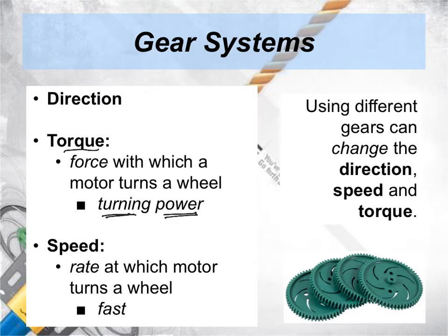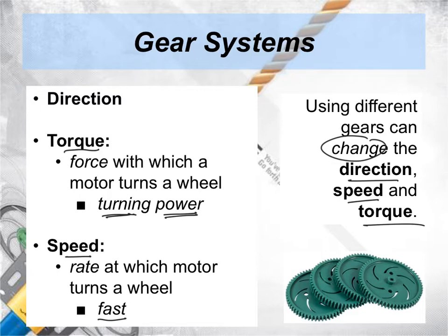The other thing that's important is that gears can change speed — that's how fast your robot can go. It's the rate at which a motor turns a wheel. So using different gears can change direction, speed, and torque of your robot. Can you think of some reasons why you'd want to change the torque, speed, and direction of your robot?